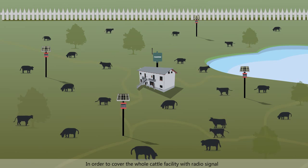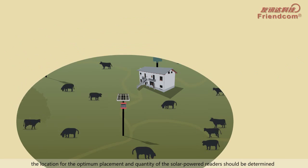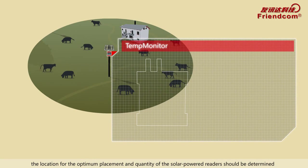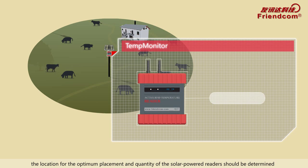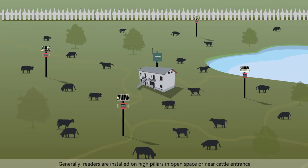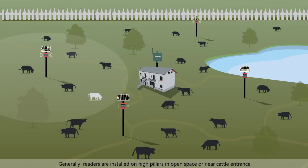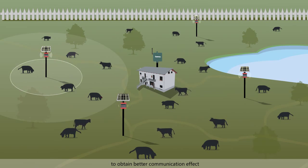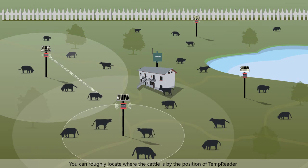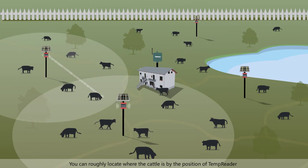In order to cover the whole cattle facility with radio signal, the location for optimum placement and quantity of the solar-powered readers should be determined. Generally, readers are installed on high pillars in open space or near cattle entrances to obtain better communication. You can roughly locate where the cattle are by the position of the Temp Reader.